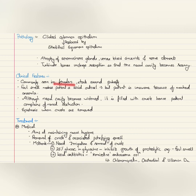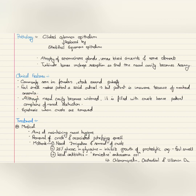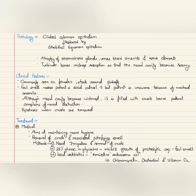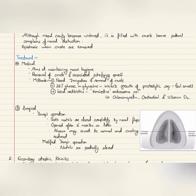The clinical features: this disease is commonly seen in females and starts around puberty. The foul smell due to crusts inside the nasal cavity makes the patient a social outcast; however, the patient is unaware of the smell because of marked anosmia. Although the nasal cavity becomes widened or roomy, it is filled with crusts, so the patient complains of nasal obstruction. When these crusts are removed, epistaxis might occur.